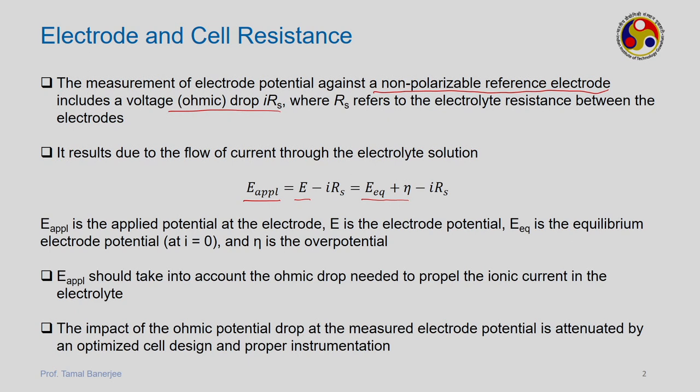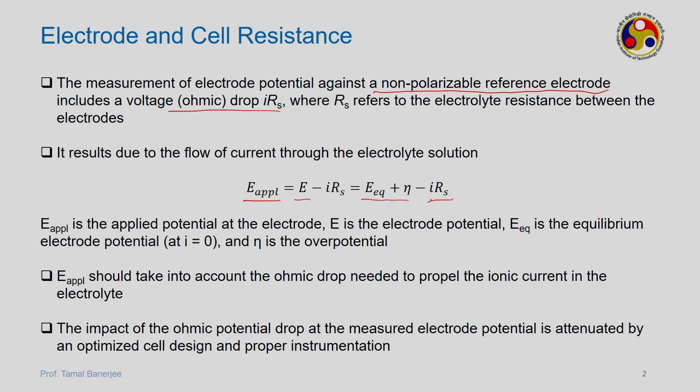Overpotential means the extent to which an electrode dipped in solution is polarized. If it is not polarized at all — no matter how much you increase the current, the voltage remains the same — we call it a non-polarizable reference electrode. On the other hand, if the voltage changes even when you pass an infinitesimally small current, that is the ideal polarizable electrode. Then you add the IRS.